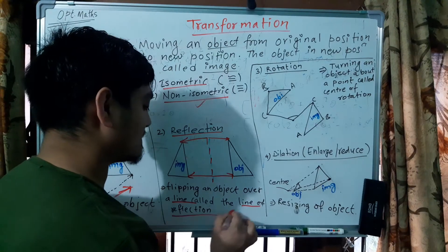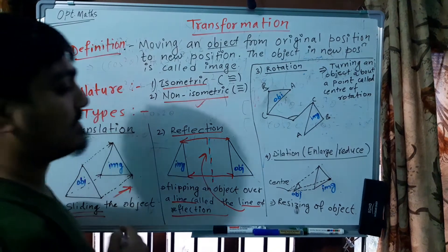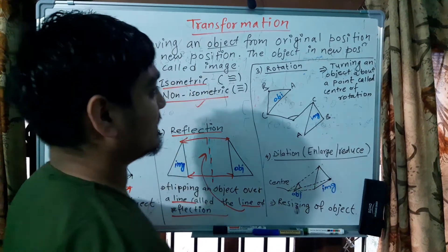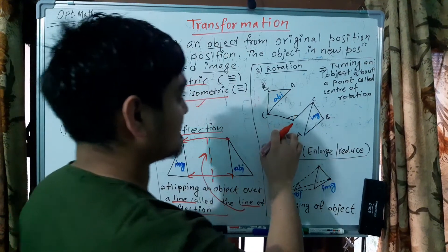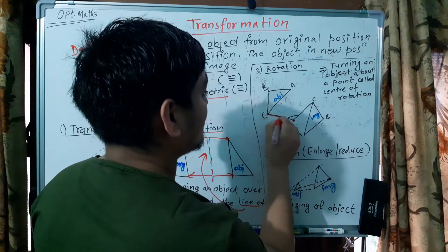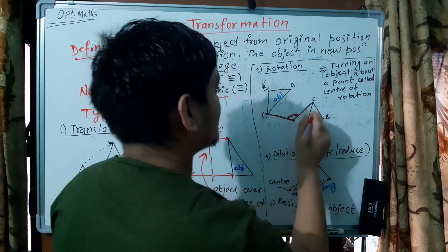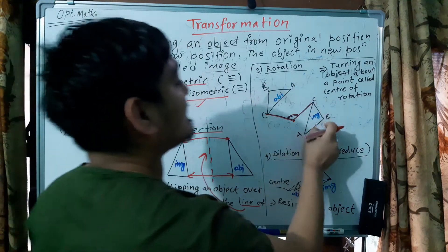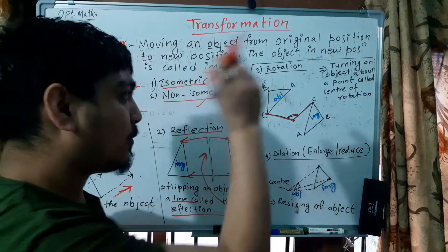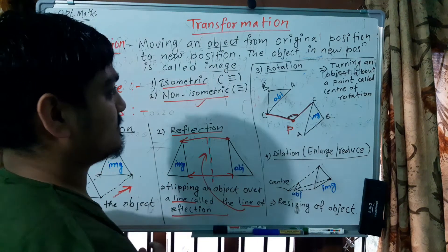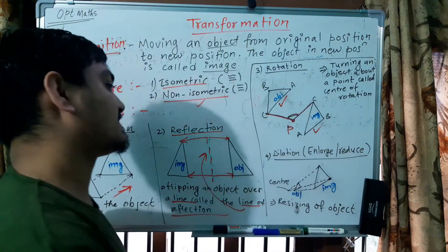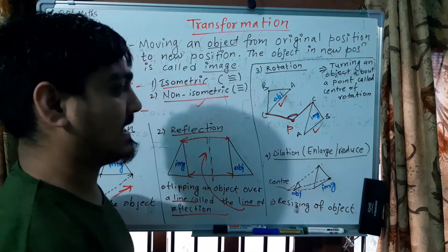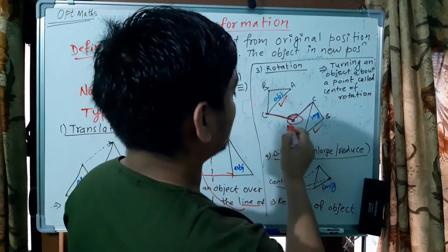The third type is rotation, which involves a line of reflection — actually a center of rotation — and the object is turned around this center. The center of rotation is the fixed point around which the object turns. This turning transformation is called rotation.